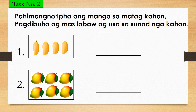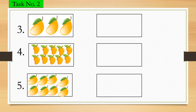So I think nakasabot na kamo. Now let us try to answer task number 2. Pahimang no — ipa ang mangga sa matag kahon. Pagdibuho og mas labaw o gusa sa sunod nga kahon. Palihug kuha sa imuhang papel — ang imong i-drawing sa sunod nga kahon dapat mas labaw o gusa. Number 1 — adunay upat, so pila ka mangga ang imong i-drawing sa sunod nga kahon nga magpakita og mas labaw o gusa. Number 2 — adunay 6 ka mangga, so unsa may number nga mas labaw o gusa sa 6. Number 3 — adunay tulo ka mangga, so mag-drawing kag mas labaw o gusa — the number that comes after 3.